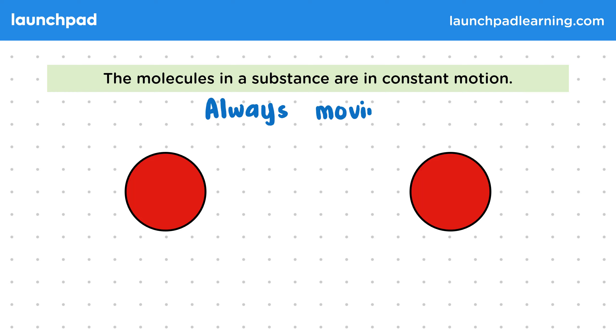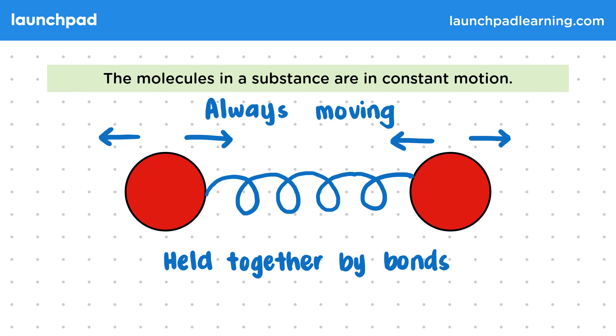These will be always moving, for example by vibrating back and forth. The way the molecules move will depend on the intermolecular bonds which are holding the molecules together. We can usually think of these like springs, which can be pushed and pulled.